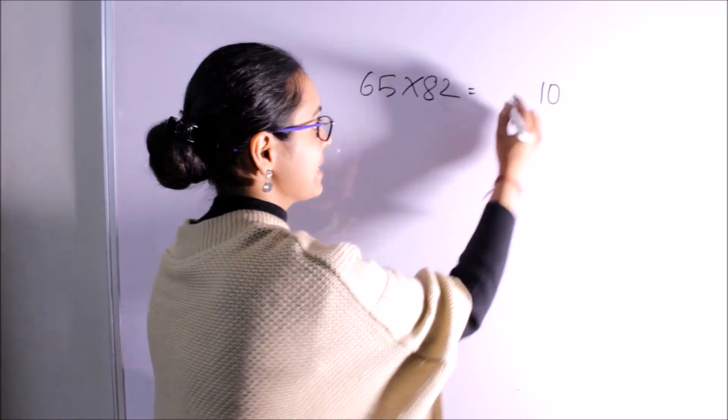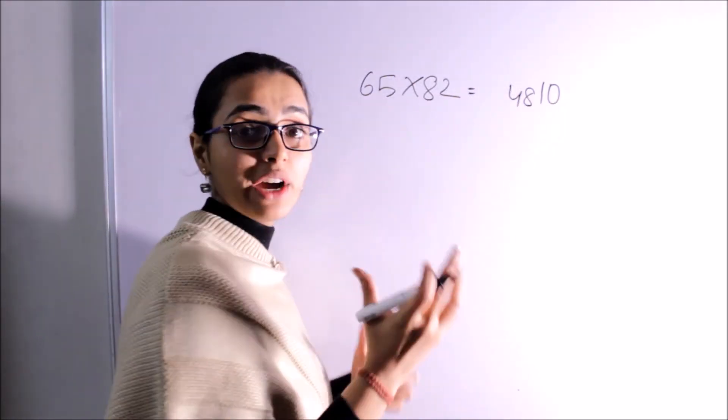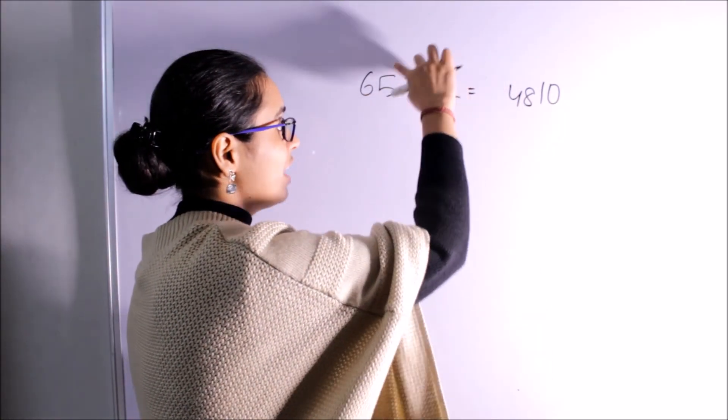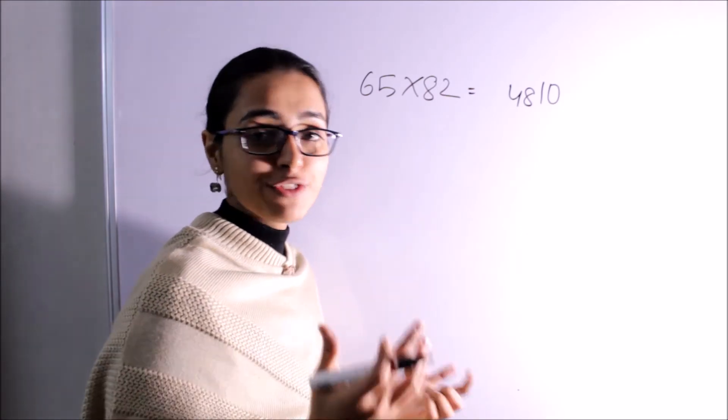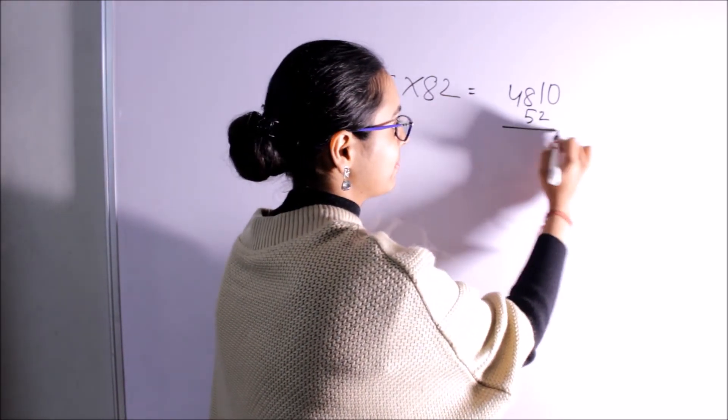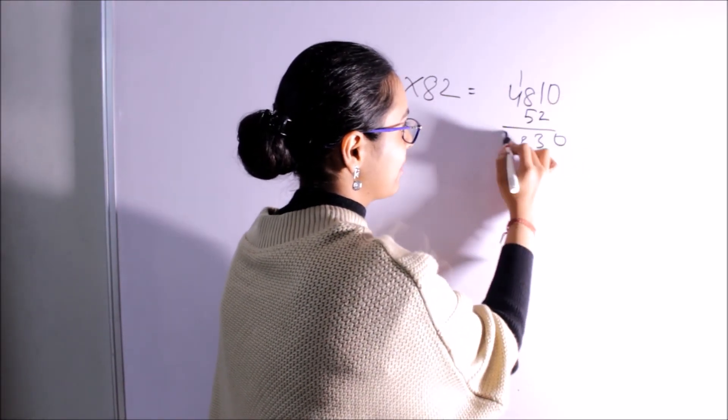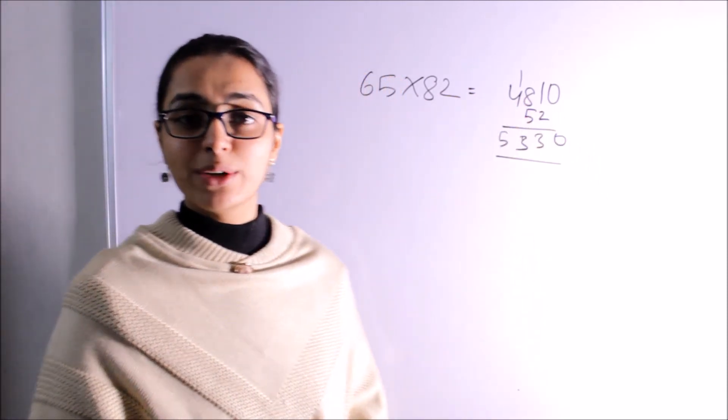5, 2's are 10. 6, 8's are 48. Following our rainbow method, 6, 2's are 12 plus 5, 8's are 40, which is 52. Here we have our answer: 5, 3, 3, 0.